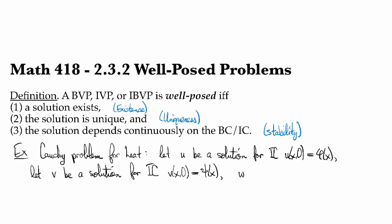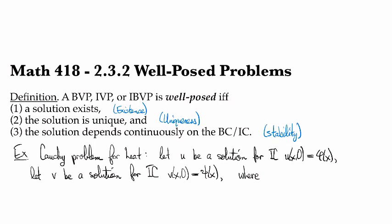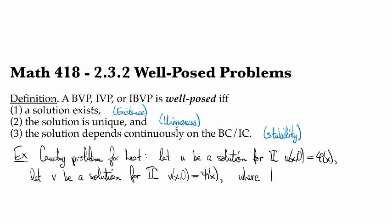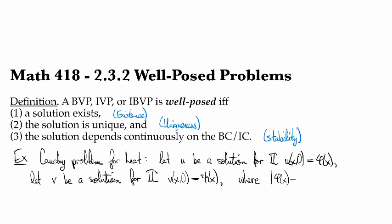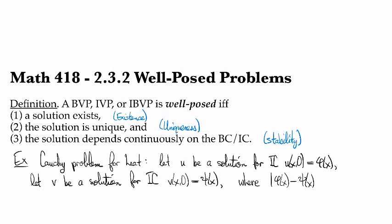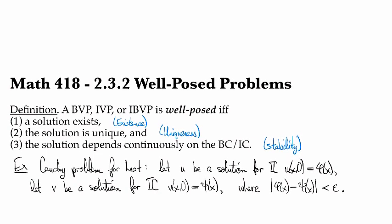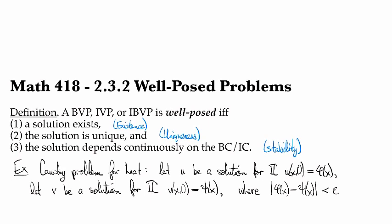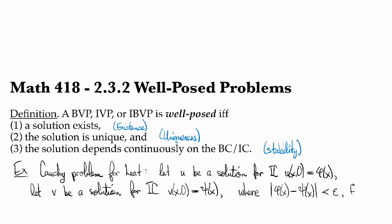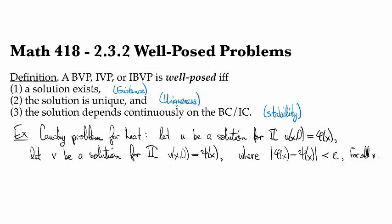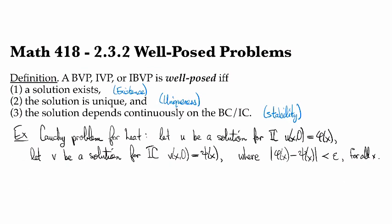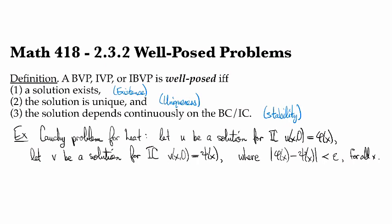And let's choose these initial conditions to be close to each other. So we'll say that phi minus psi is less than epsilon, where epsilon is some small number. And the key point here is that this is true for all x, a uniform bound over the entire real line. So let's define w to be the difference between these two, u minus v.